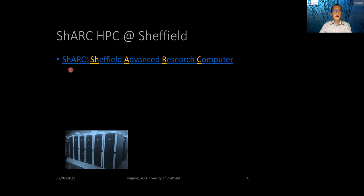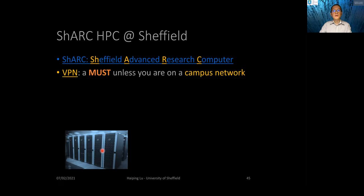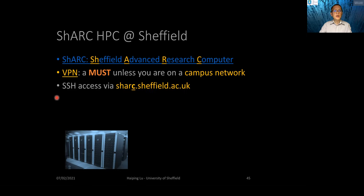We will do our lab and assessment on the HPC. The HPC is called SHARC HPC — the full name is Sheffield Advanced Research Computer. This is the actual picture of the SHARC system at our university. To use the HPC, you must connect to the VPN first, unless you are on the campus network such as university accommodation with intranet. The VPN will connect you to the campus network, and then you can connect to HPC through SSH.